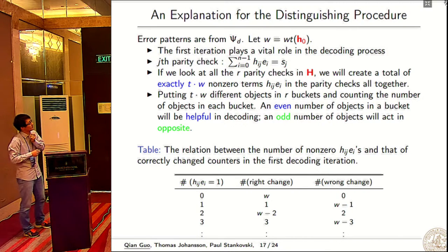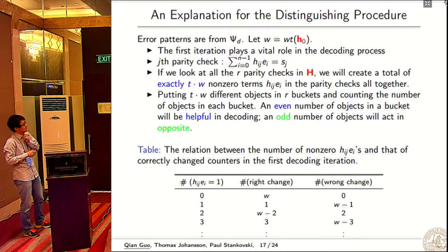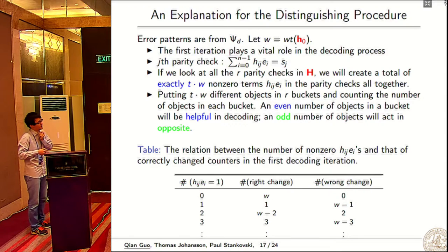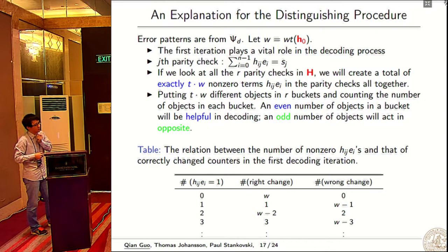I will give an intuitive explanation. We choose error patterns from psi_d and w is the weight of h0. The first iteration plays a vital role in the decoding process because Gallagher's bit flipping algorithm will terminate in a small number of iterations, typically three to five iterations. This is one parity check equation.